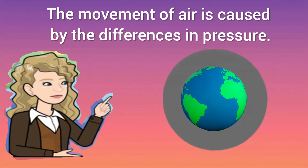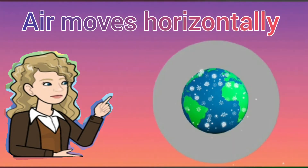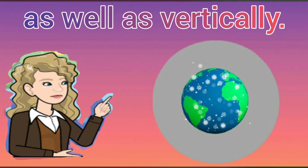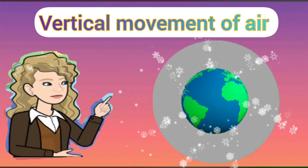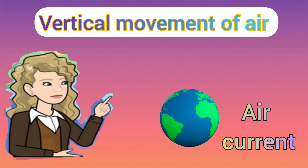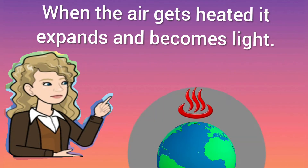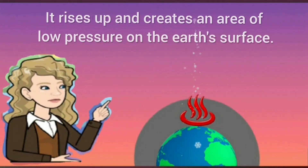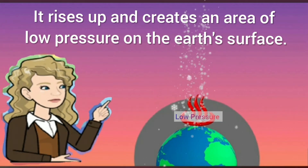Air moves because of differences in pressure. It moves horizontally as well as vertically. The vertical movement of air is called an air current. When the air gets heated, it expands and becomes light. As a result, it rises up and creates an area of low pressure on the earth's surface.